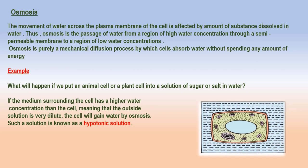Osmosis. Water also follows the law of diffusion. The spontaneous movement of water molecules through a selectively permeable membrane is called osmosis. The movement of water across the plasma membrane is affected by the amount of substance dissolved in water. Thus, osmosis is the passage of water from a region of high water concentration through a semi-permeable membrane to a region of low water concentration. If the medium surrounding the cell has a higher water concentration than the cell — that is, if the solution is very dilute (hypotonic solution) — the cell will gain water by osmosis.